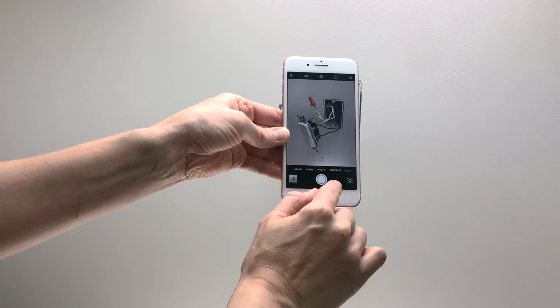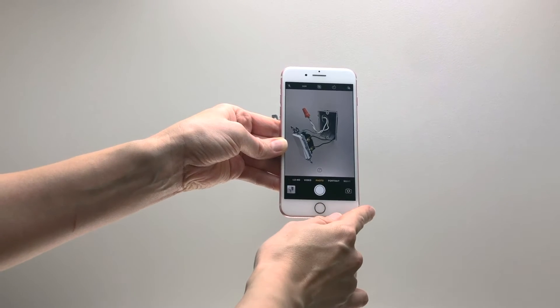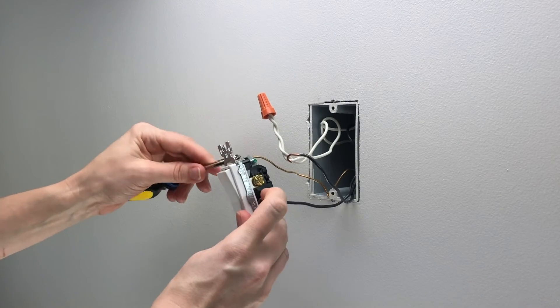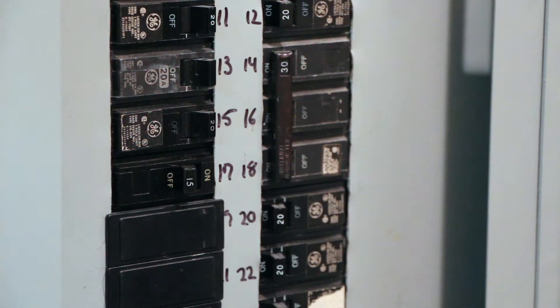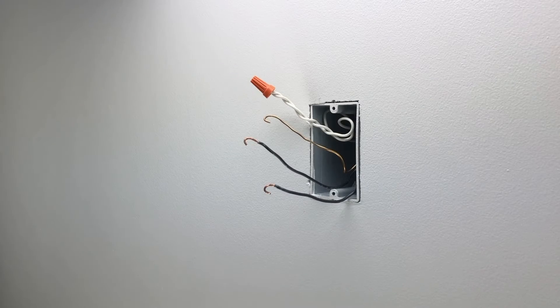Take a photo of your existing wiring for future reference. Disconnect the old switch. Turn the power back on at the breaker. Before installing Instinct, let's identify the wires in the gang box.